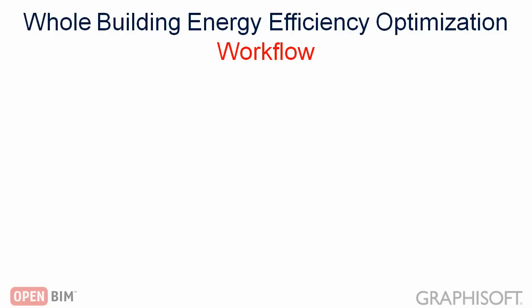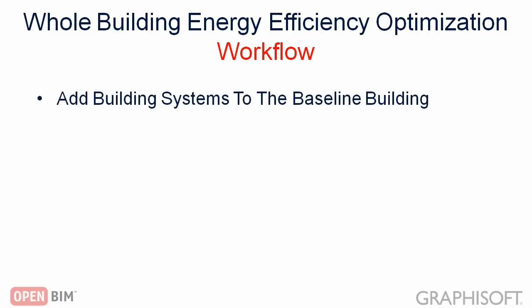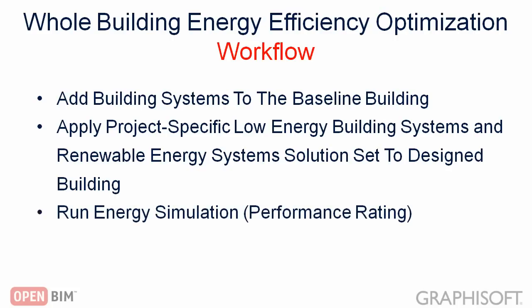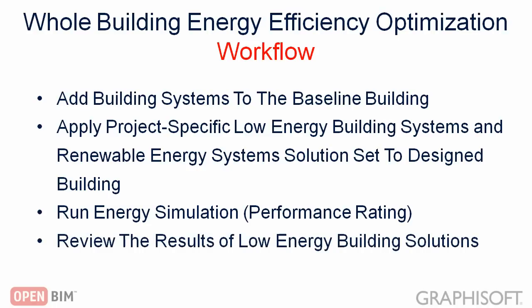Let's review and summarize the whole building energy efficiency optimization workflow. Start by adding building systems to the baseline design and saving the energy model in baseline building reference file format. Size the designed building systems based on the results of the previously executed energy demand calculation. Use Sensitivity Analysis to determine the project-specific low energy building system and renewable energy system solution sets, then apply them to the proposed building's energy model. Assign the baseline building reference file to the designed building's energy model before executing the hourly dynamic energy simulation in performance rating mode. Review and document the designed building's energy performance rating results.